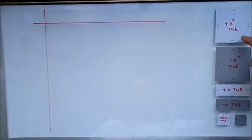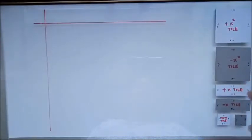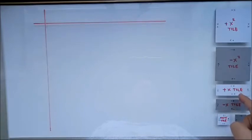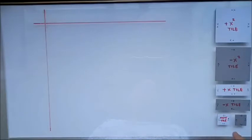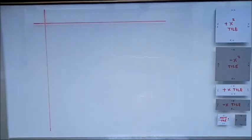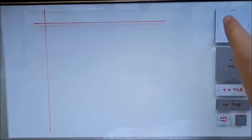We have the x-squared tile here — the white one, the bigger one. We have the negative x-squared tile — the gray color. We have the positive x tile — the longer rectangle. We have the negative x tile — the gray one. We have the unit tile — white is positive and gray is negative.